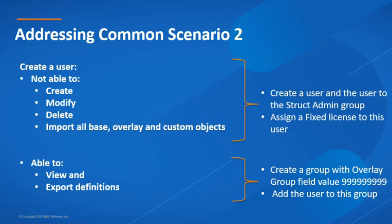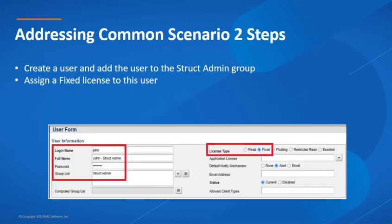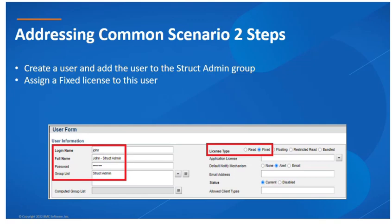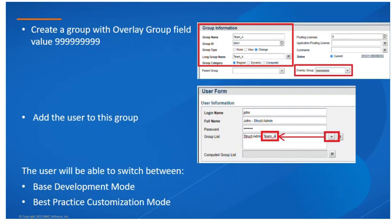In the following example, we want to create a user not able to create, modify, delete or import any base, overlay and custom objects; however, we want the user to be able to view and export any object's definition. This access can be used by a user whose main task could be, for example, backing up any object either for safety purposes or to maintain a repository of Remedy objects. The steps are: create the user and add them to the struct admin group, assign a fixed license, create a group with the overlay group field set to value 9x9, and add the user to this group. The user will then be able to switch between base development mode and best practice customization mode.